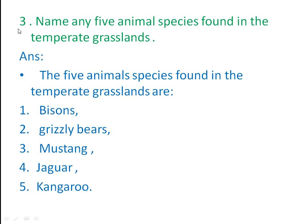Third question: name any five animal species found in temperate grasslands. The five animal species found in temperate grasslands are bison, grizzly bears, mustang, jaguar, and kangaroos.